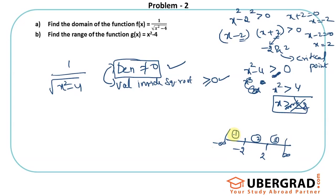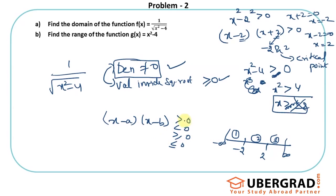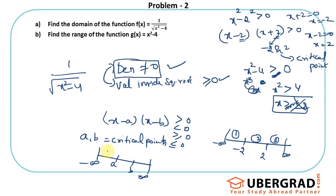I need x²-4 to be positive. Let me test the middle zone by substituting x = 0: 0² - 4 = -4, which is negative. So the zone -2 to 2 is negative throughout. Since the signs alternate, the zones minus infinity to -2 and 2 to infinity must both be positive — which is exactly what I need. So the expression is positive for x < -2 or x > 2.